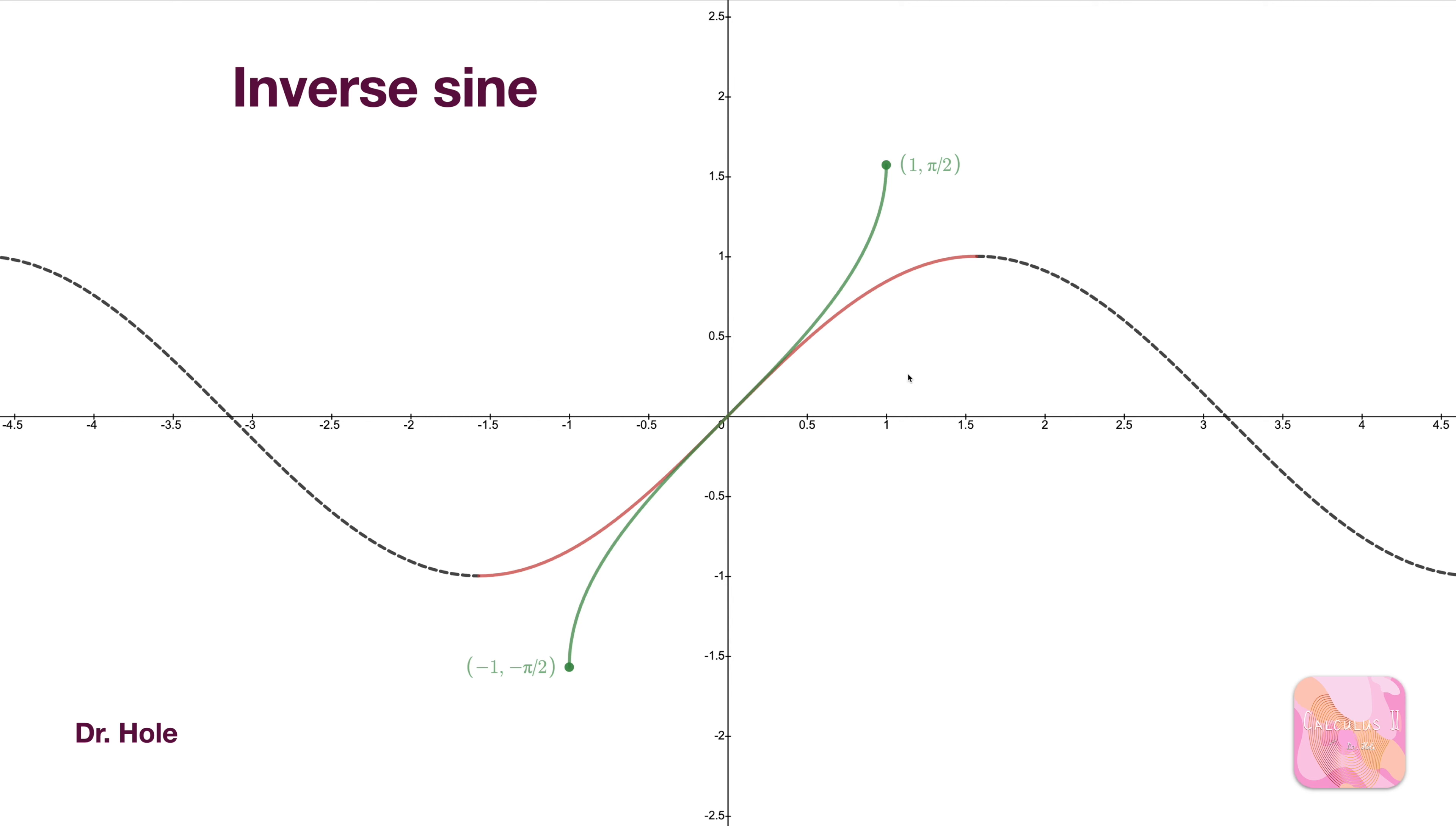And this red curve is a portion of the sine wave. Hence, the green graph and the red graph are inverses to each other. But since the red graph is a portion of the sine wave, the green graph is the inverse of sine.